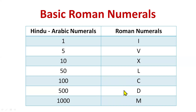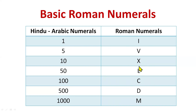No doubt it's a bit difficult to remember all these, but you can remember 1 is I, 5 is V, and 10 is X. For the rest, I can tell you a trick: LCD. You know a Samsung LCD is where you watch movies? So remember this series — LCD. L is 50, C is 100, and D is 500.